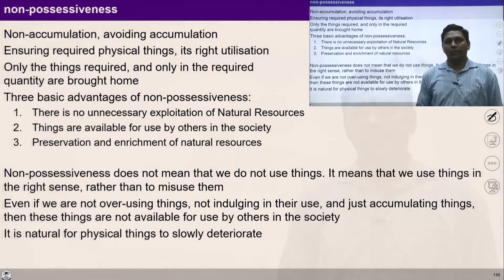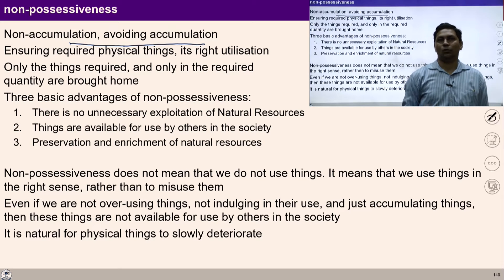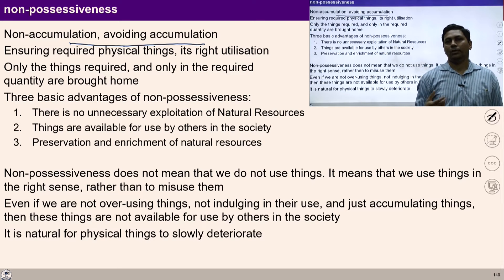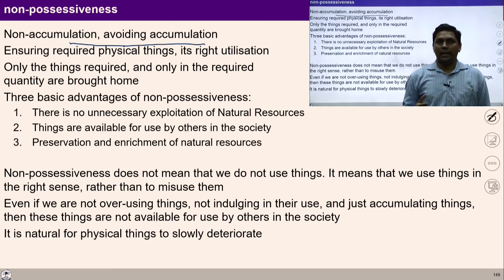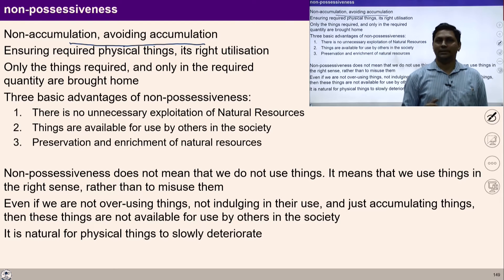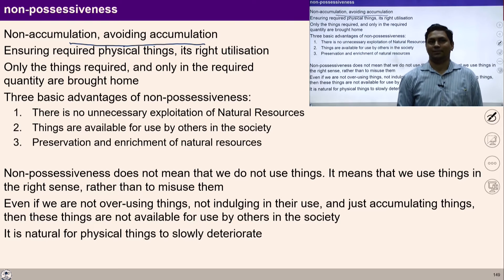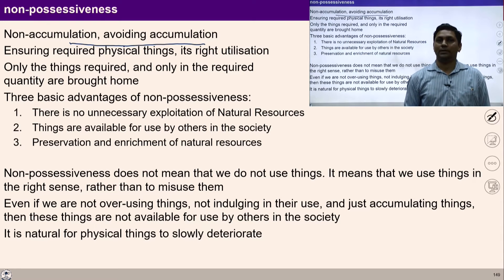Non-possessiveness means non-accumulation, or avoiding accumulation. Non-accumulation literally means lack of accumulation. Accumulation refers to collecting unnecessary items from the perspective of profit and consumption. So non-accumulation refers to income for expenditure — that is, we produce and store only those physical facilities that we need, which we have to ensure for the purpose of right utilization.